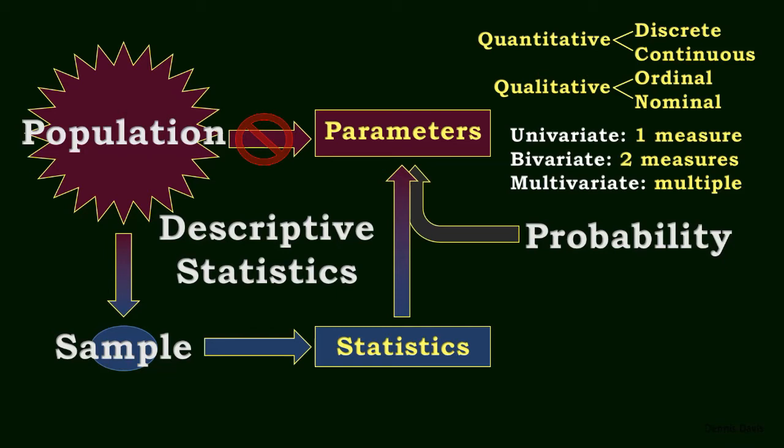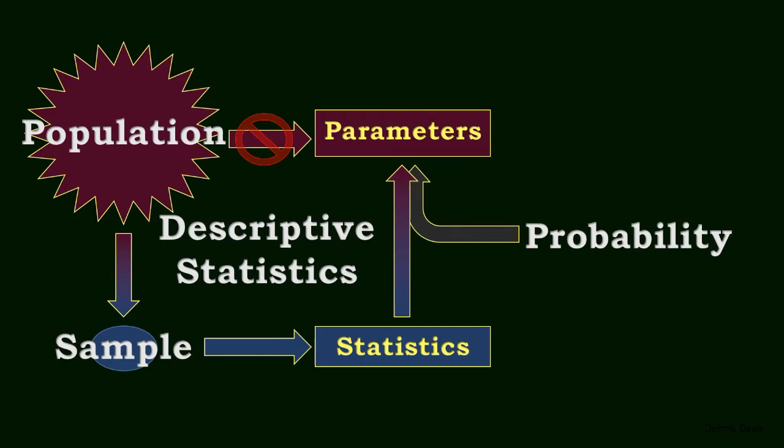When we measure two variables per element, such as height and weight, the data is bivariate. Predictably, multivariate simply means multiple variables. Collecting more than one observation means that we might be able to discover a relationship between them.